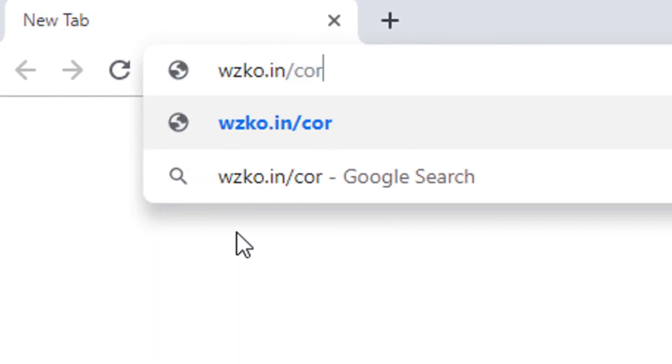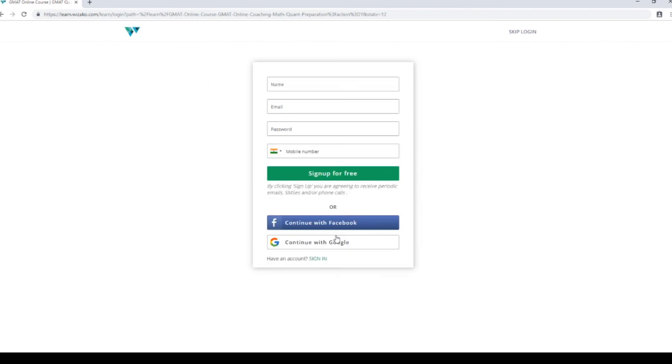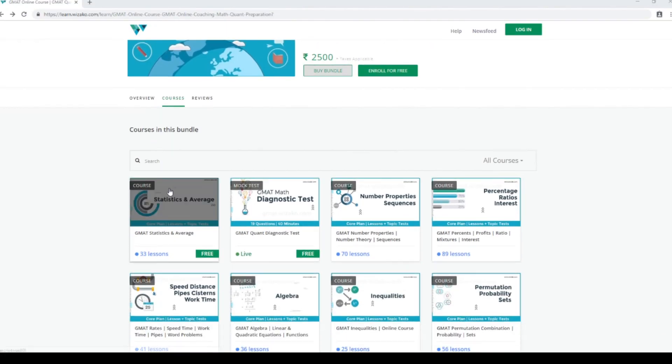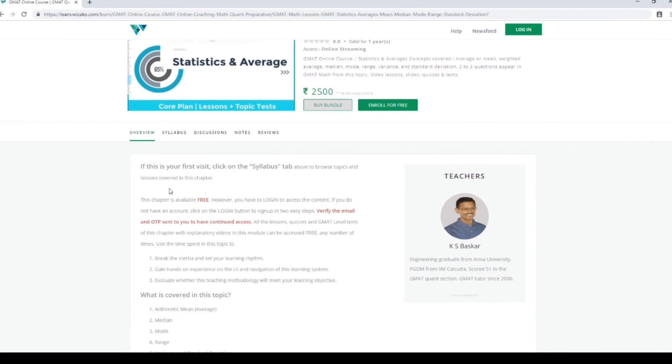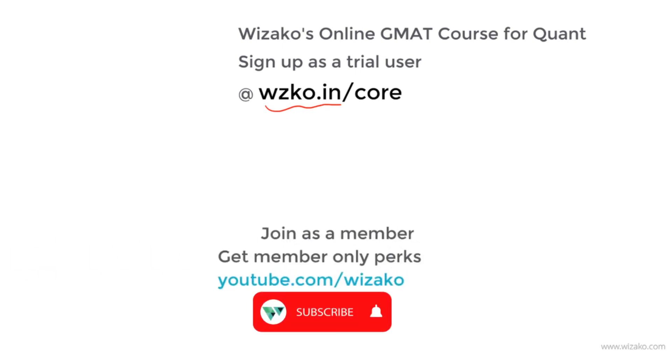Before you leave, two things. Sign up as a trial user at wzko.in/core. One of the most comprehensive online GMAT courses. Get started with a free topic, statistics and averages. Build momentum to your GMAT preparation. Subsequently, pay up and unlock the remaining topics. Lastly, subscribe to the channel youtube.com/bizaco and spread the word among your friends who are preparing for GMAT. You may also choose to join this channel as a member for a small monthly fee and enjoy member-only perks that come with it and will help you boost your GMAT preparation.